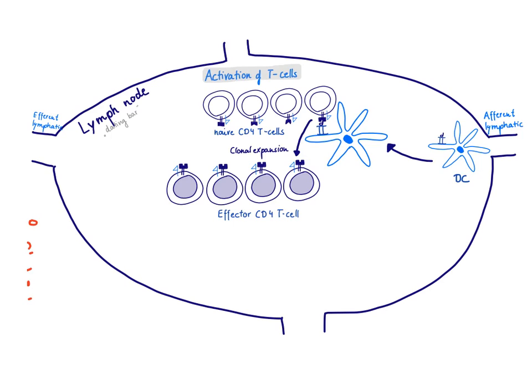And so once this partner has been found and it found a T cell that can recognize via its T cell receptor the peptide that is presented on MHC class 2, it can get activated, this T cell in a process called clonal expansion and become an effector CD4 T cell. And the effector CD4 T cell is a cell that's going to help clear the infection.